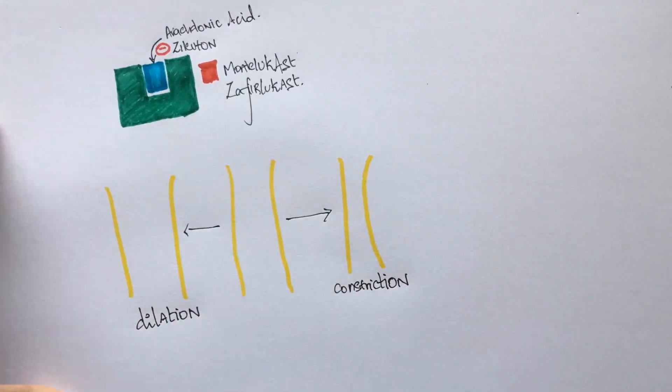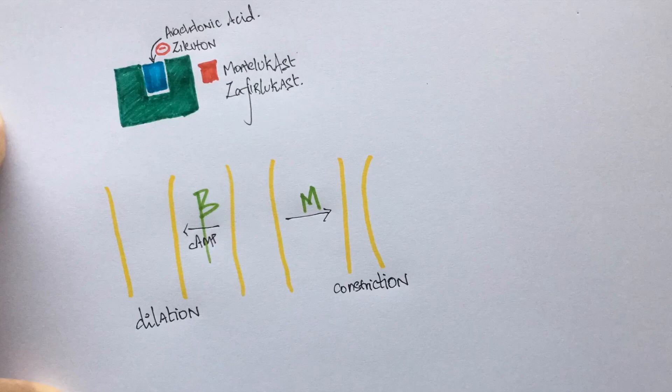Let's look at the bronchus. cAMP is required to dilate the bronchus. Activation of beta-2 receptors increases cAMP and hence produces bronchodilation. So we can understand that the sympathetic nervous system dilates the bronchi. The parasympathetic nervous system constricts the airway. This is why we use muscarinic receptor blockers for treating patients with asthma.